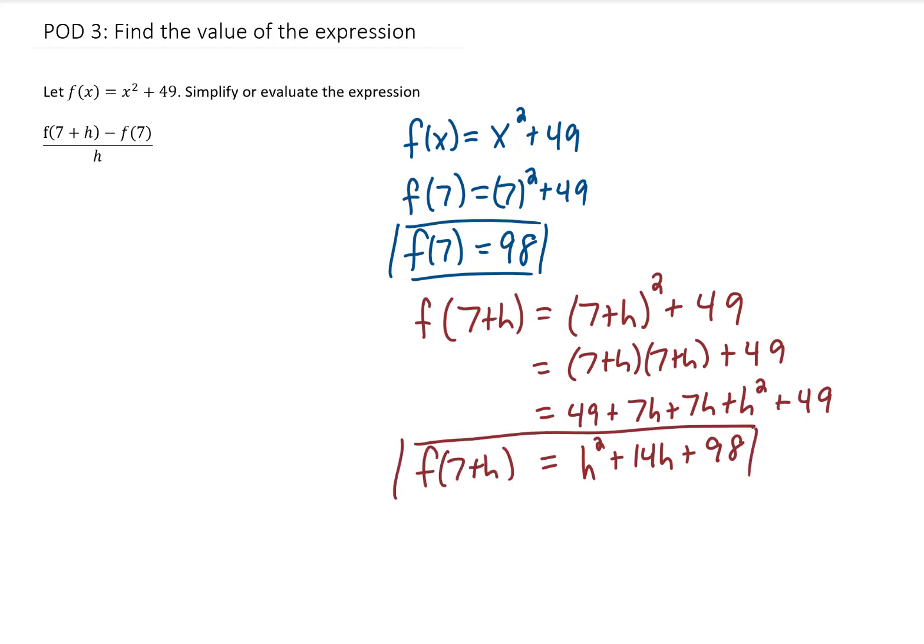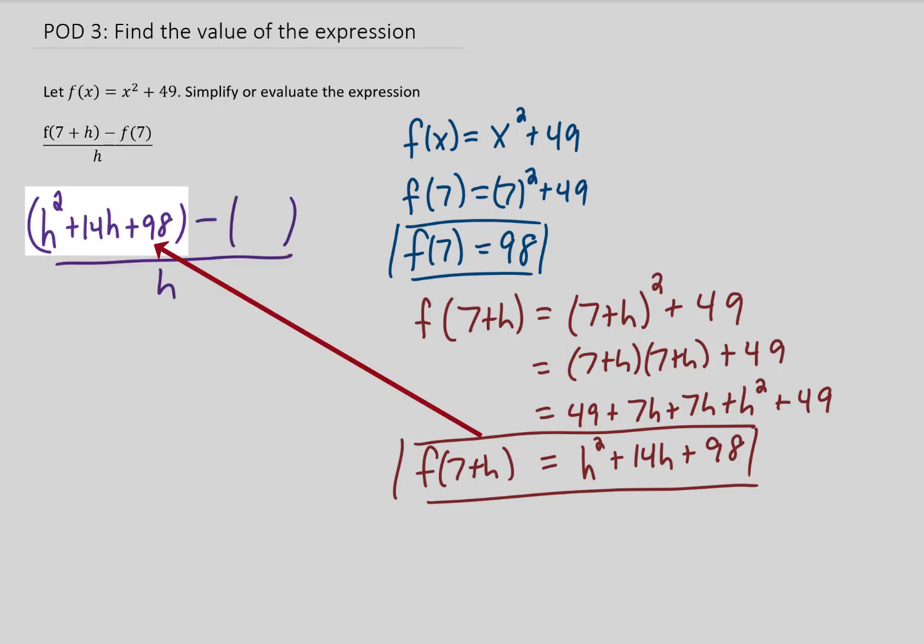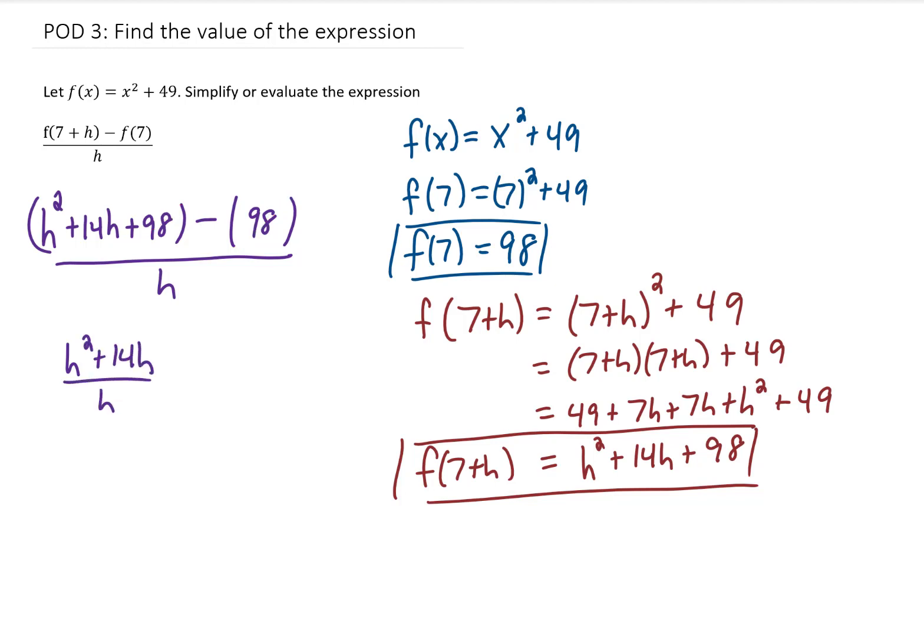We're going to use this in just a second. Now let's look at this expression that we're supposed to simplify. Let's replace f(7 + h) with our result and replace f(7) with the result we just got as well. We just copied down that expression with our two results. You'll notice that this 98 and this -98 cancel. That leaves us with h² + 14h all over h.